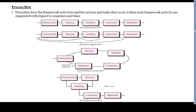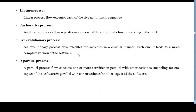The first type is linear process flow. The five framework activities are: communication, planning, modeling, construction, and deployment. A linear process flow executes each of these five activities in sequence, one by one.